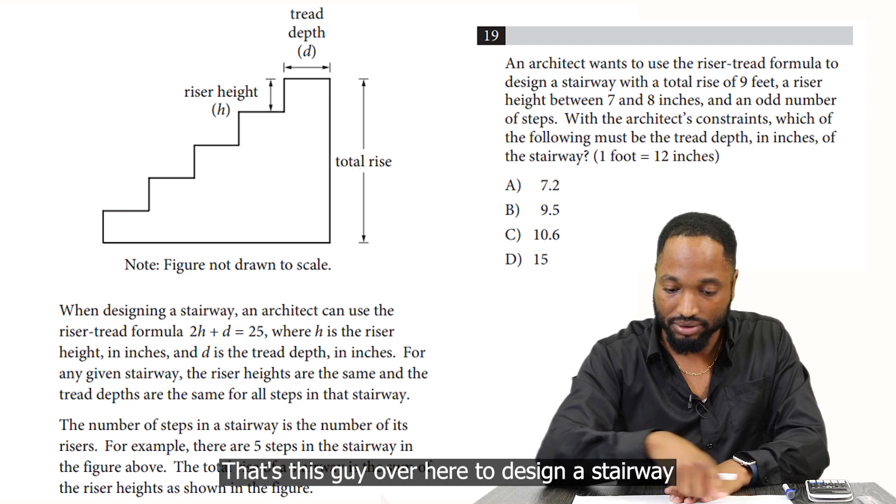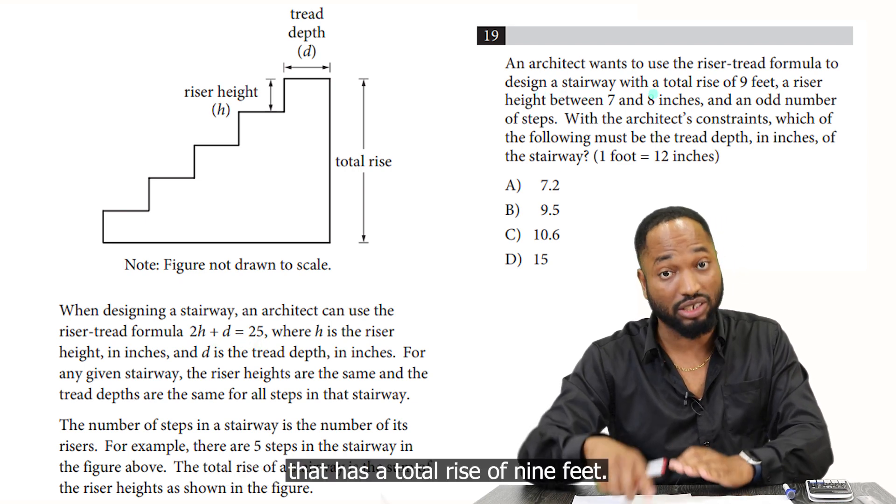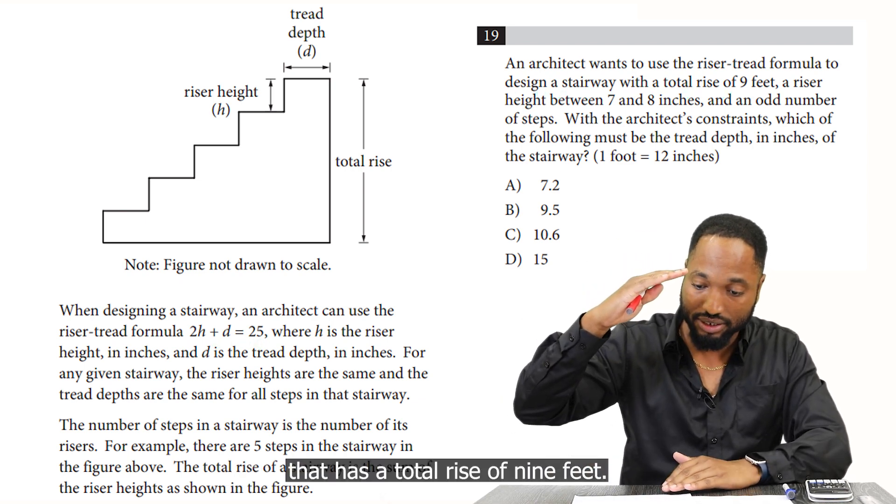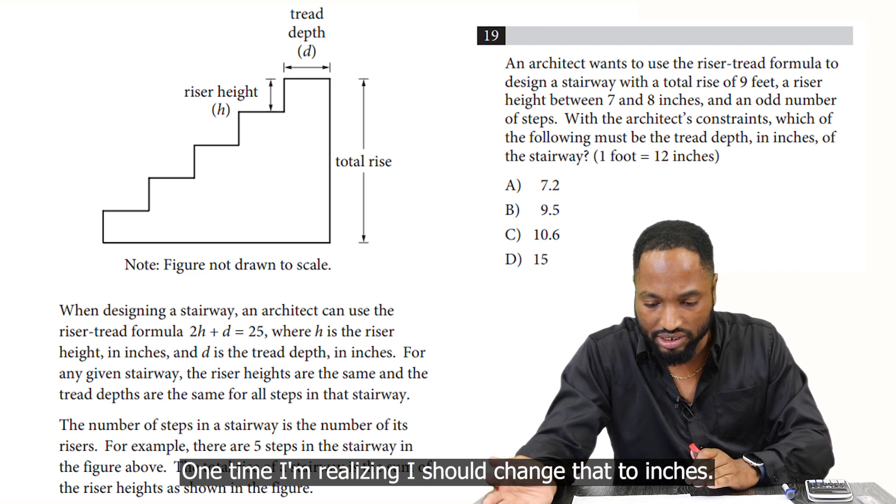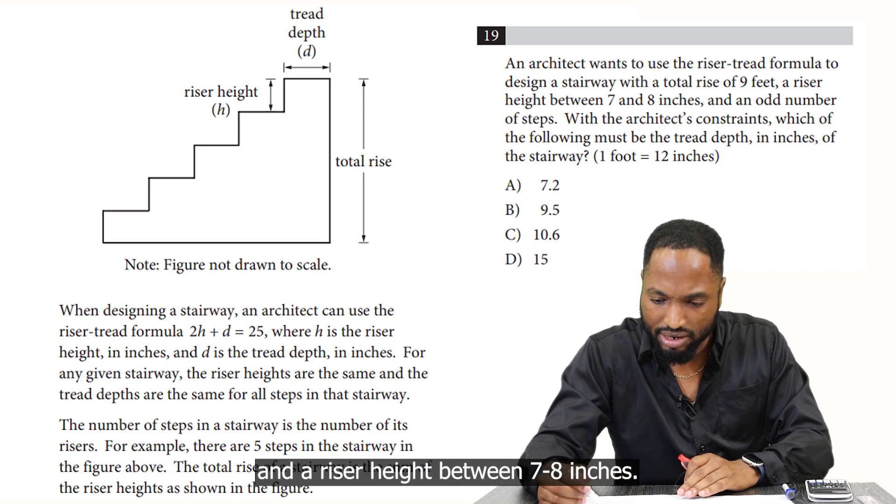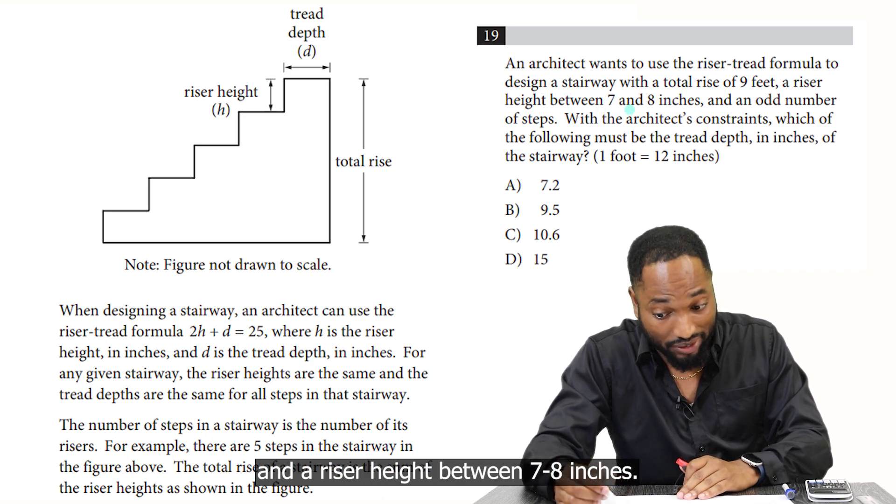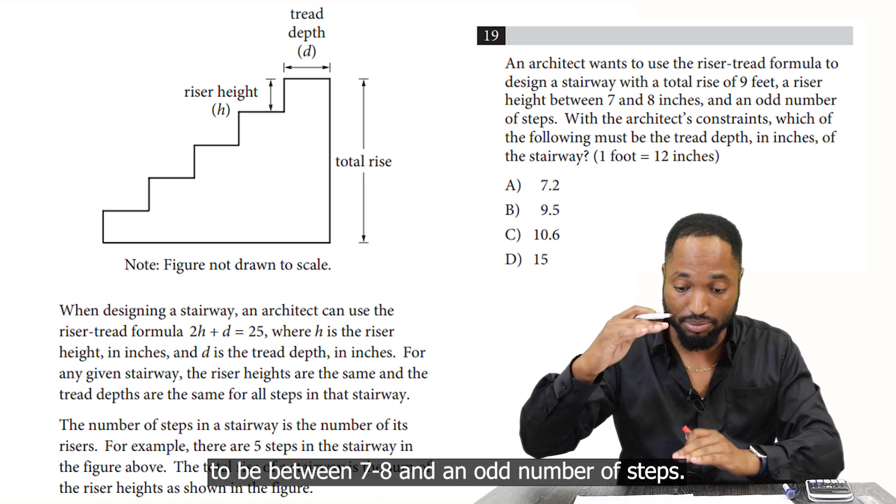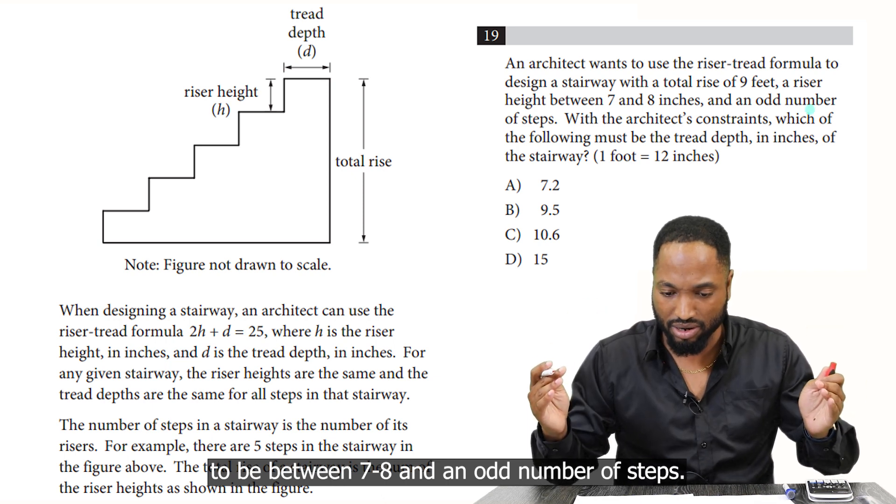To design a stairway that has a total rise of nine feet. One thing I'm realizing, I should change that to inches so everything will be in the same unit. And a riser height between seven and eight inches. So he wants the riser height to be between seven and eight and an odd number of steps.